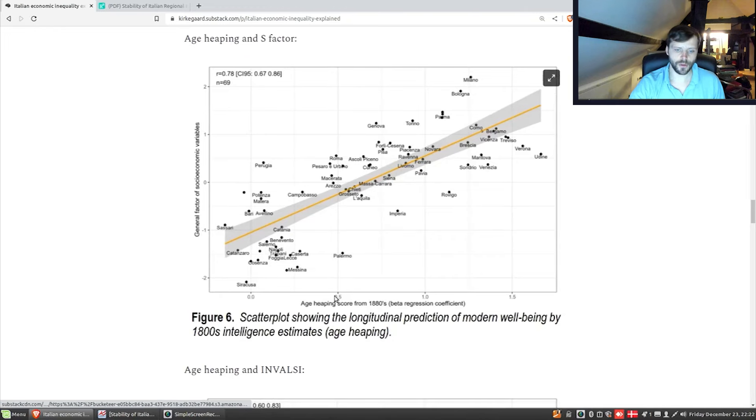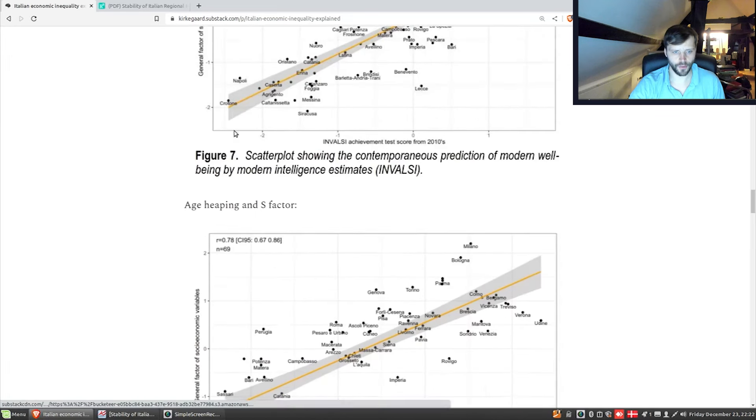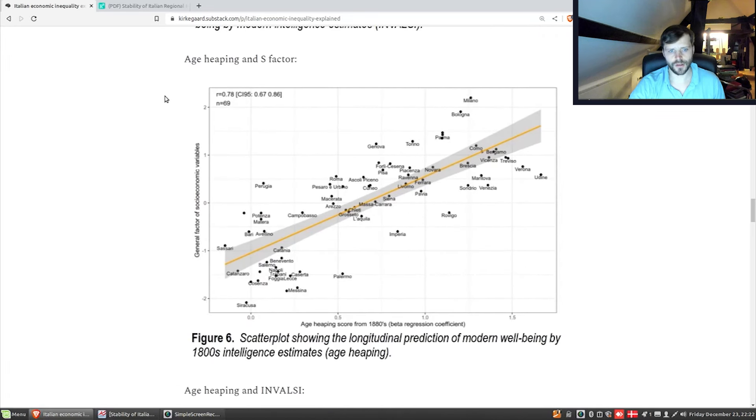Otherwise, we see up here Milano, a wealthy trade city, which has some city effects. I don't know what's going on with the Benevento and Lecce down here, but I guess someone will tell us in the comments. If we do the same thing, but we look at the age-heaping scores, now the sample size is reduced to 69. Remember, from the map, there was a lot of gray areas. But still, we see the correlation is quite good. It's 0.78, which is slightly weaker, but because the sample size has also been reduced by a third or so, this difference is not really reliable. We don't know if that's a real decline or not. Milano is still up here. I don't see Bolzano, and that's because there was no age-heaping for them.